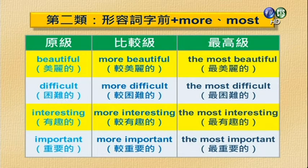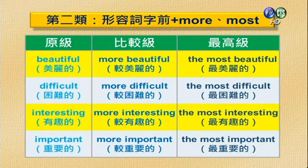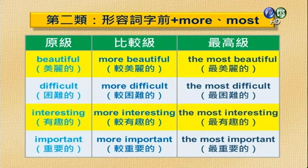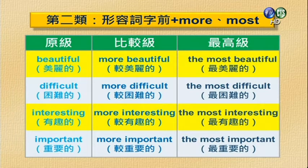第二类是形容词字前面加more或most，原级比较级最高级分别是：beautiful / more beautiful / the most beautiful；difficult / more difficult / the most difficult；interesting / more interesting / the most interesting；important / more important / the most important。